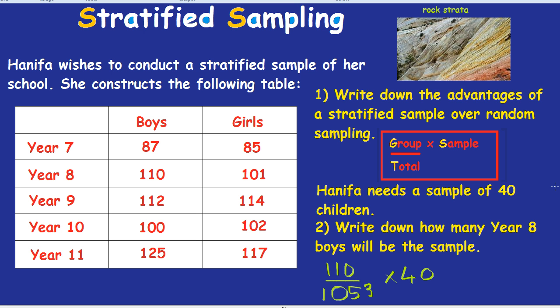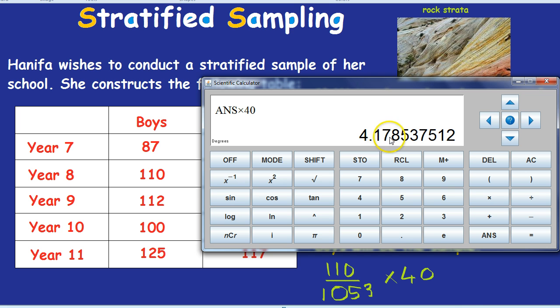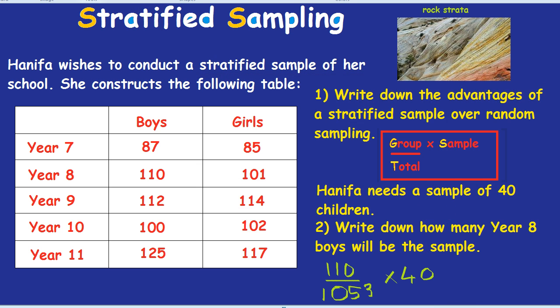Remember, in a random sample we could end up with half the sample being year 8 boys, but because it's a stratified sample we make sure each group is represented accurately. Working out the calculation: 110 divided by 1053, times by 40, gives us 4.178. Obviously we can't have 4.1 people, so we round to the nearest whole number, which is 4. So there will be 4 year 8 boys in this sample.